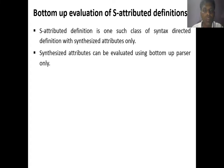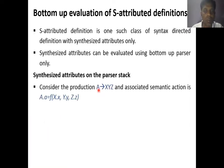We use the bottom-up parser because the synthesized attribute depends on each child. Whenever we generate the parse tree, each node's value is totally dependent on its child node. Suppose we have an example where the value of A is totally dependent on X, Y, and Z. The semantic action here is A.a — the small 'a' is the synthesized attribute of grammar symbol A. Small x is the synthesized attribute of X, small y is the synthesized attribute of Y, and z is the synthesized attribute of Z.